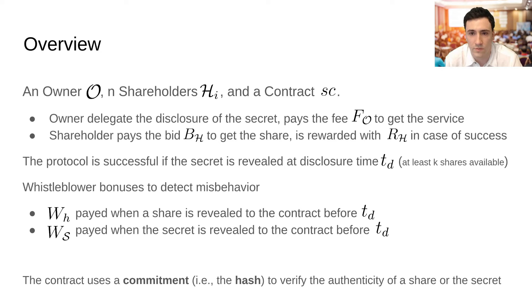The protocol also supports the role of whistleblower, or rather someone that reports user misbehavior in return for payment. If either a share or the secrets are reported to the contract before disclosure time, a bonus is immediately paid to the whistleblower. If the protocol fails due to the submission of multiple shares or the secret, all the shareholders lose their bids, and the remaining smart contract funds are destroyed.